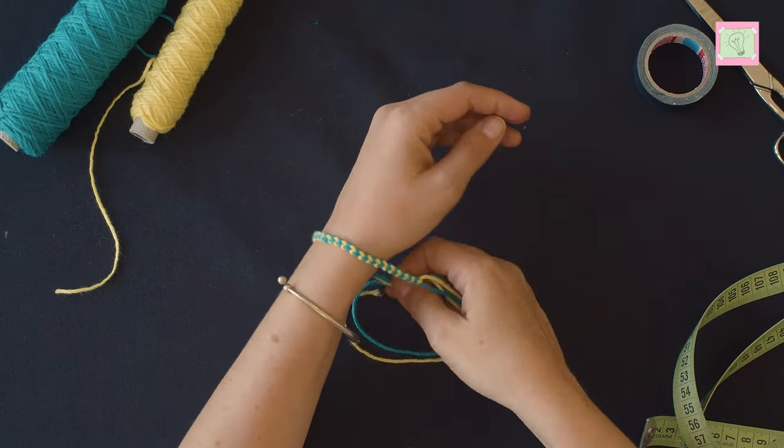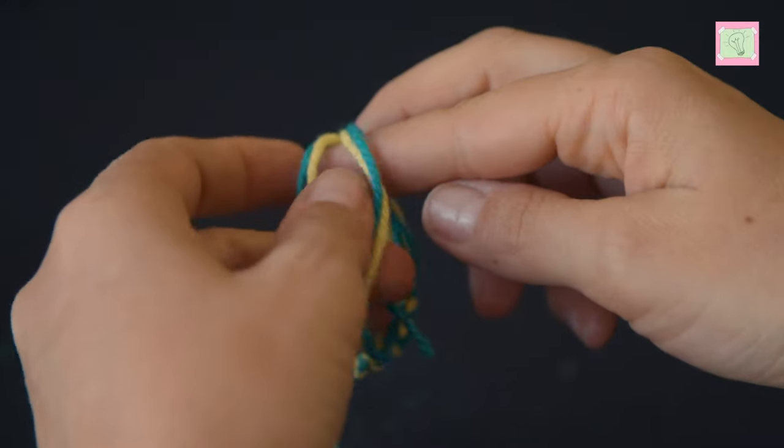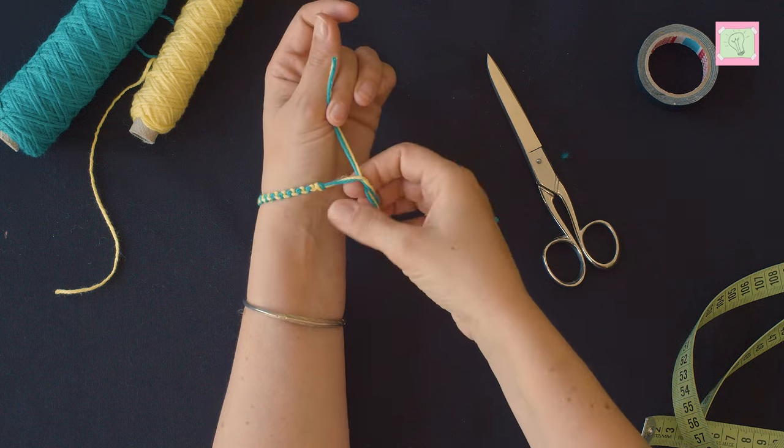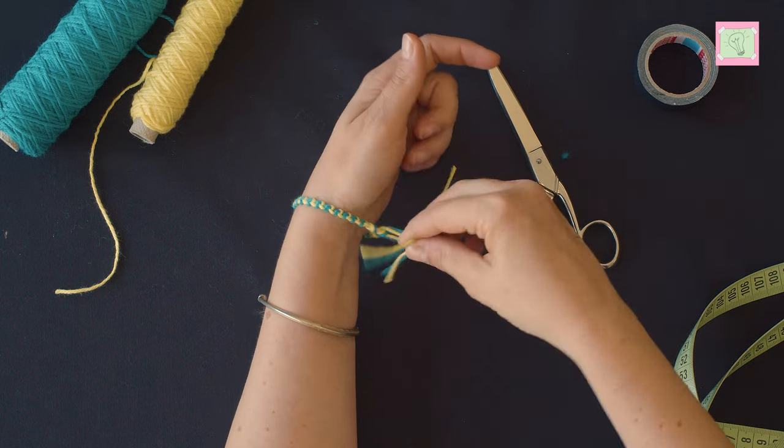At the end you can make a knot again and cut the thread off after about 10 cm or 4 inches. Now you can attach your bracelet to your wrist and cut off the threads.